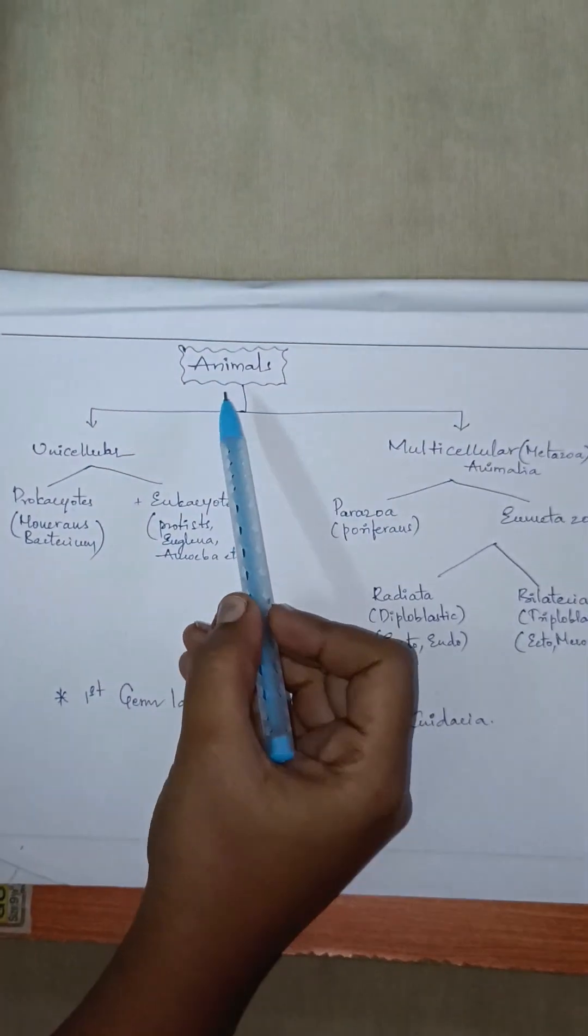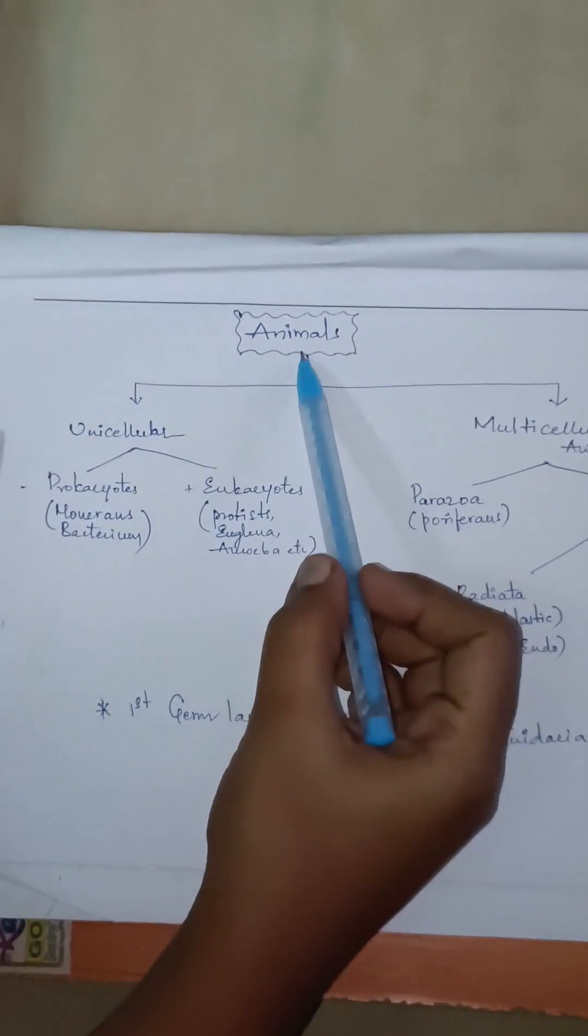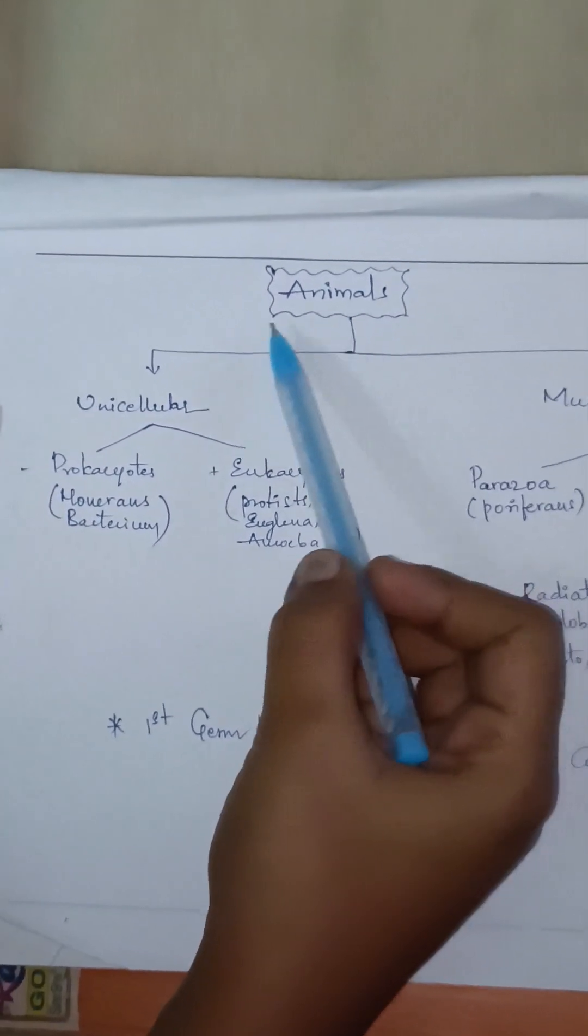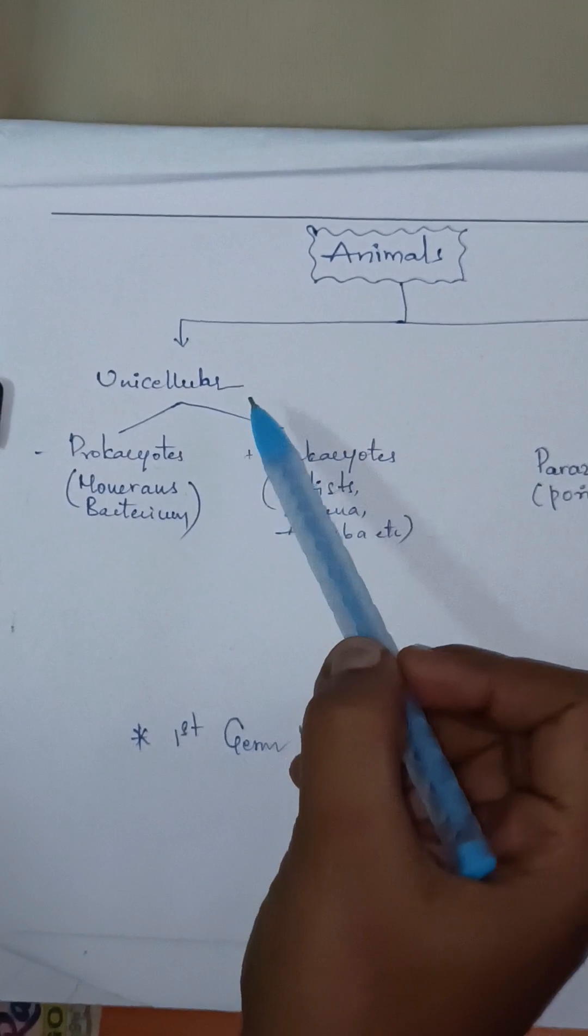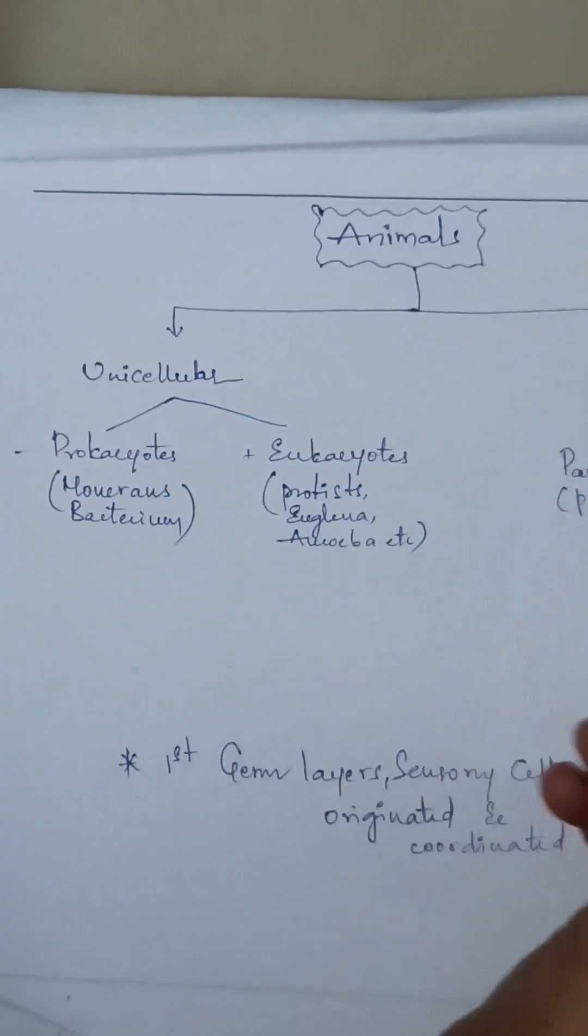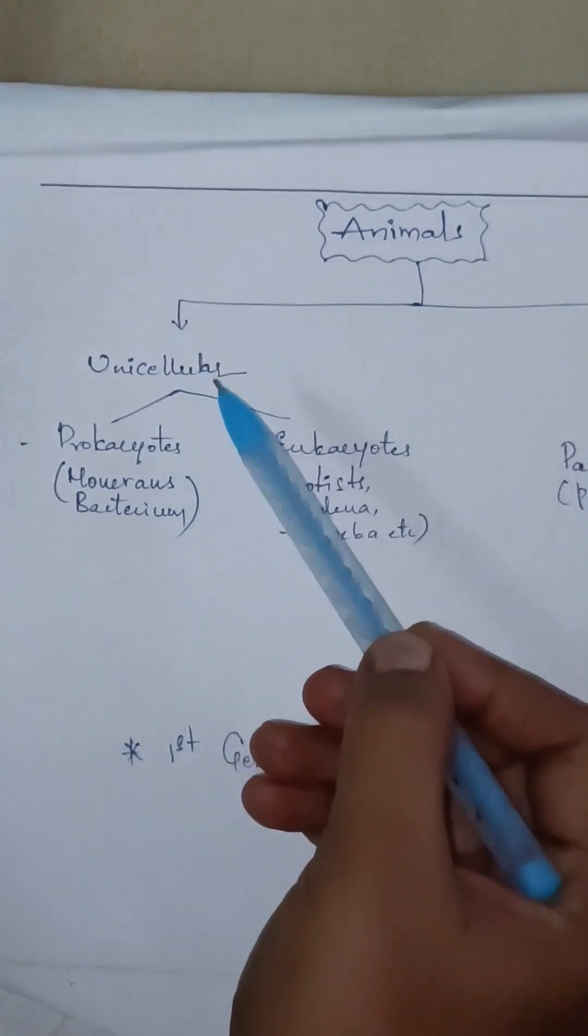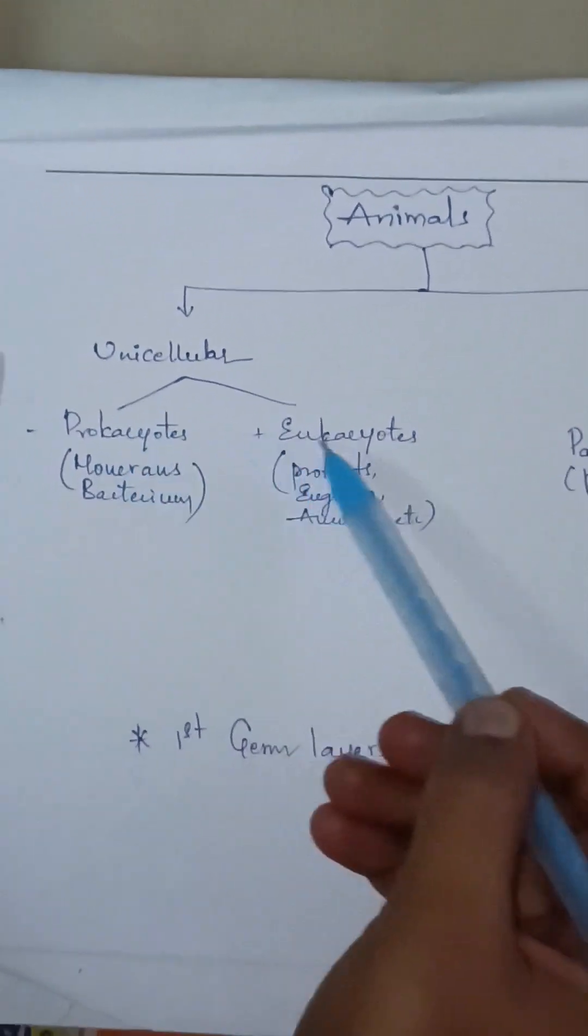Hello buddies, now we are going to discuss the introduction topic. Animals are divided into two types based on their level of cellular organization: unicellular and multicellular. Unicellular organisms are further divided into prokaryotes and eukaryotes.